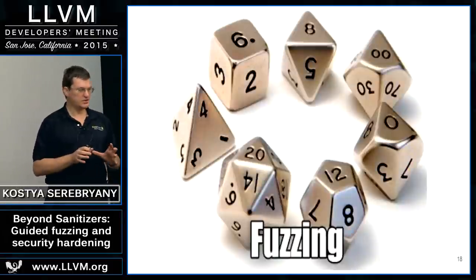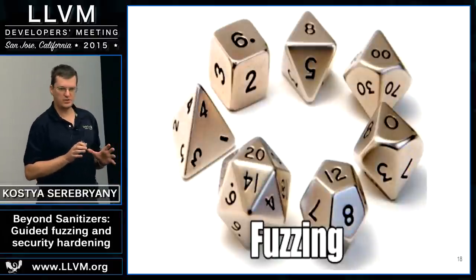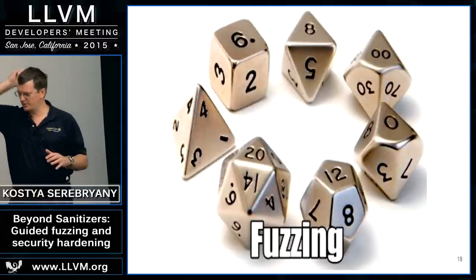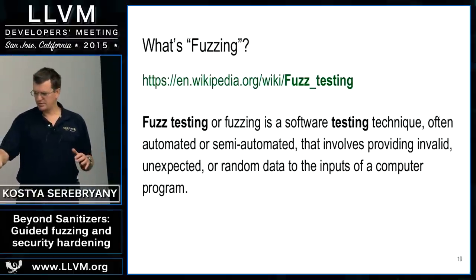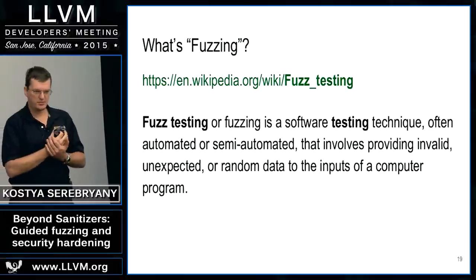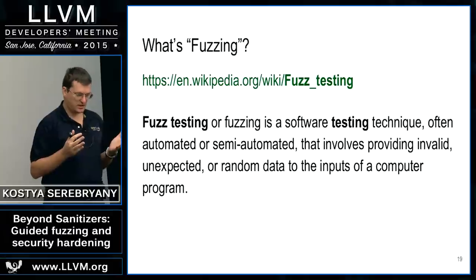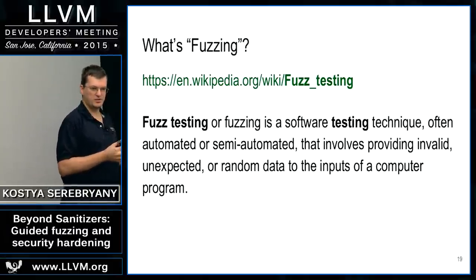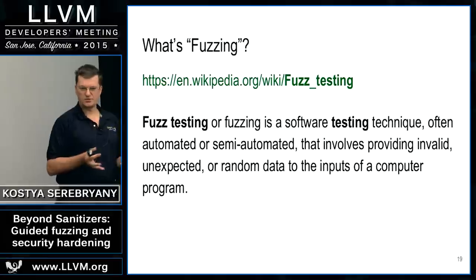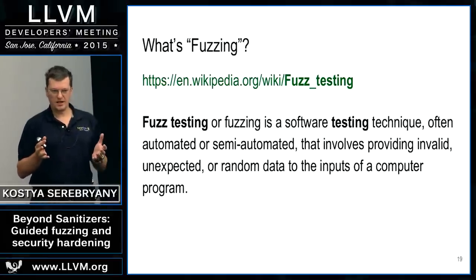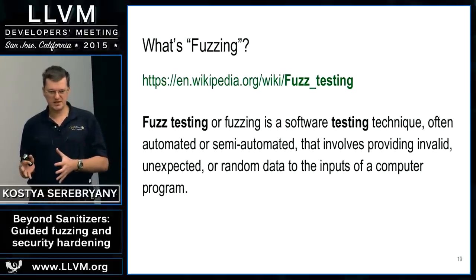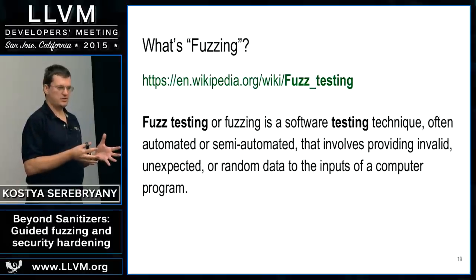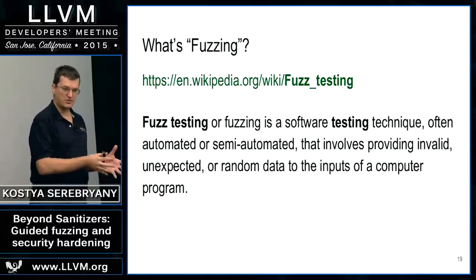Today I'll talk about two other approaches that are complementary to using sanitizers and will help improve the security of your applications. The first topic is fuzzing. Essentially, it is a testing technique where you put a huge number of random test inputs into your application and try to crash it. If you combine this with sanitizers, you will not just crash it, but get a reasonable error message from the tool.